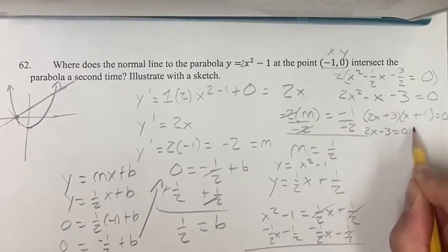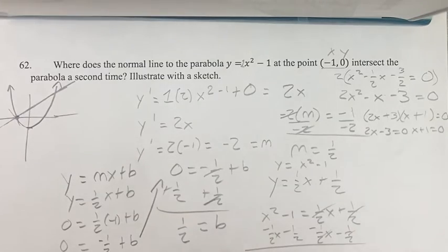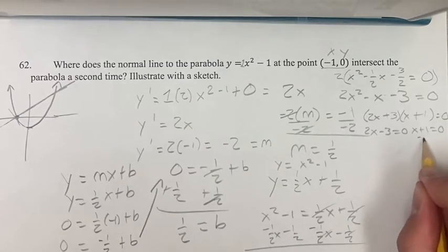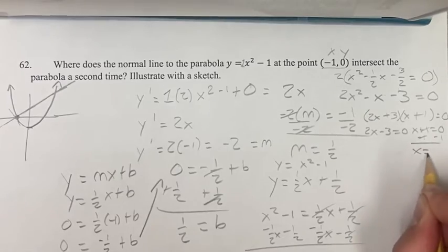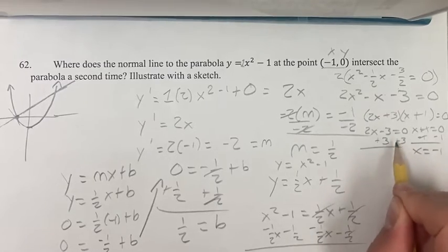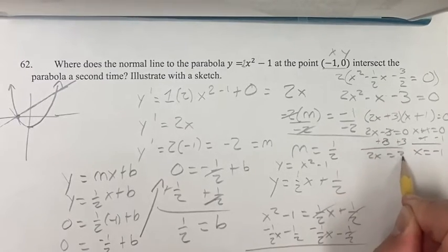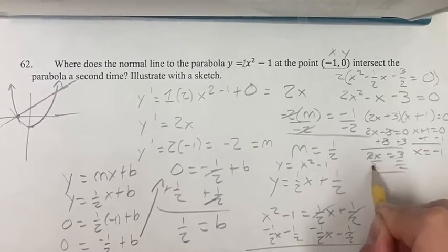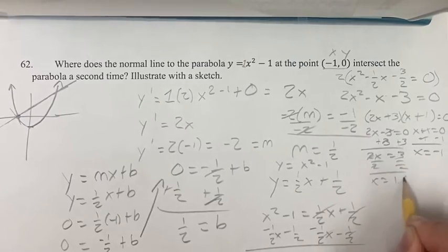So 2x minus 3 equals 0, or x plus 1 equals 0. We know for this one, x is equal to negative 1. We already knew that was going to be the point. For this one, solving for x, 2x is equal to 3, dividing by 2. x is equal to 3 halves, so 1.5.